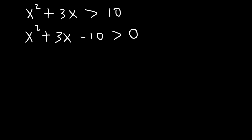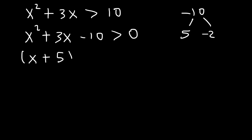And then we need to factor. What two numbers multiply to negative 10 but add to 3? That's going to be 5 and negative 2, since 5 plus negative 2 is positive 3. So it factors as x plus 5 times x minus 2.